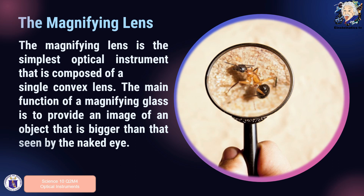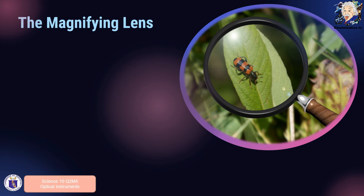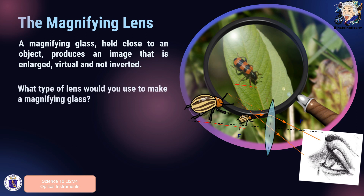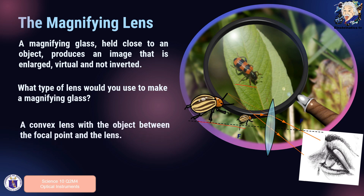The first instrument we are going to talk about is the magnifying lens. The magnifying lens is the simplest optical instrument because it only uses one lens. The type of lens used is called a convex lens. The main function of the magnifying lens is to provide an image of an object that is bigger than that seen by the naked eye. When held close to an object, it produces an image that is enlarged, virtual, and not inverted.